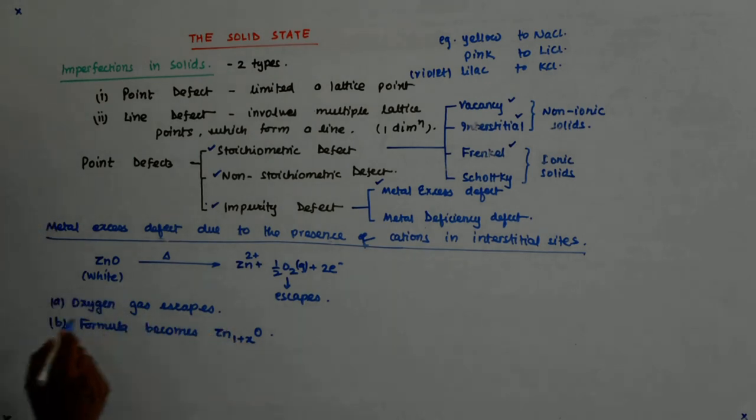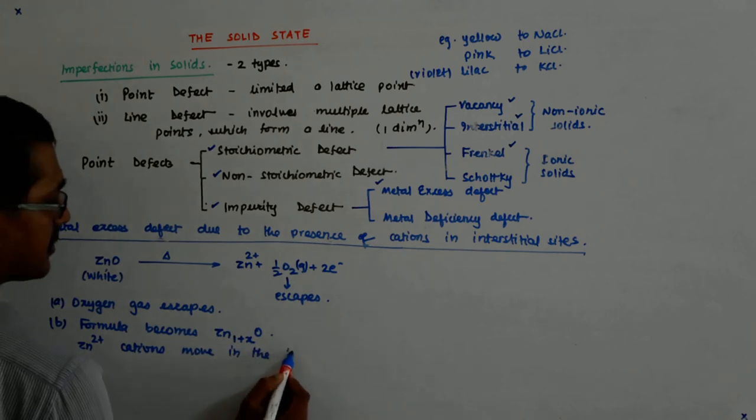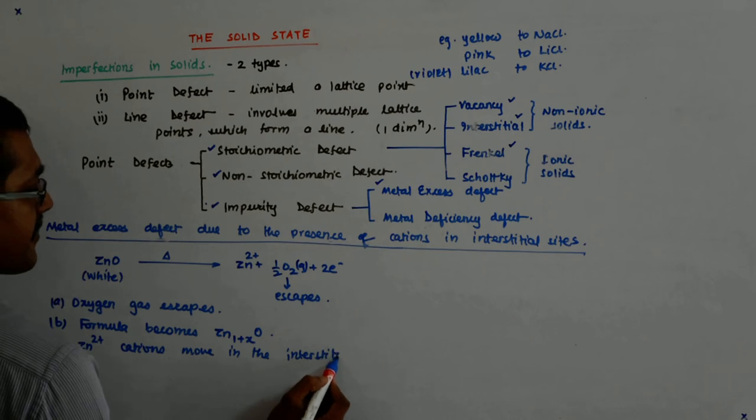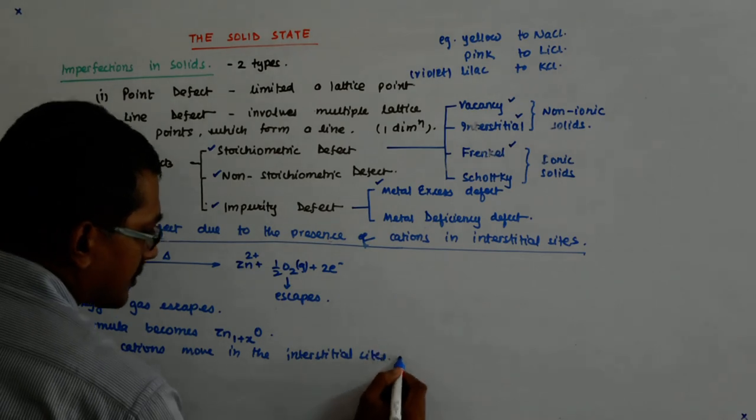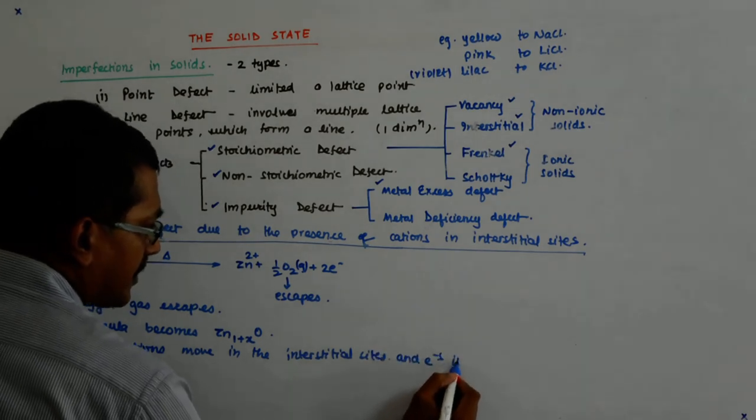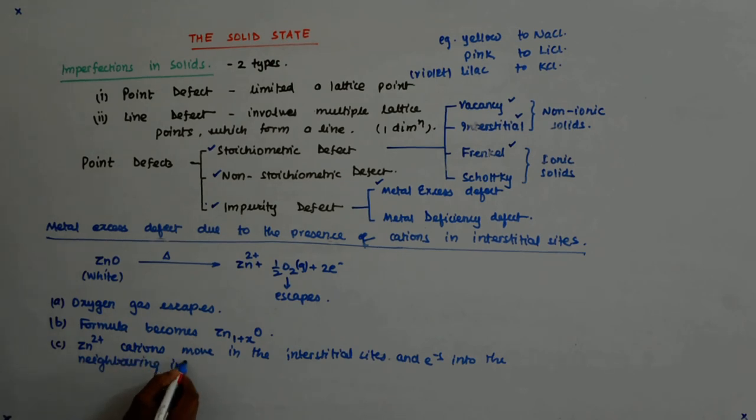So what happens? Zn2+ cations move into the interstitial sites, and electrons move into the neighboring interstitial sites.